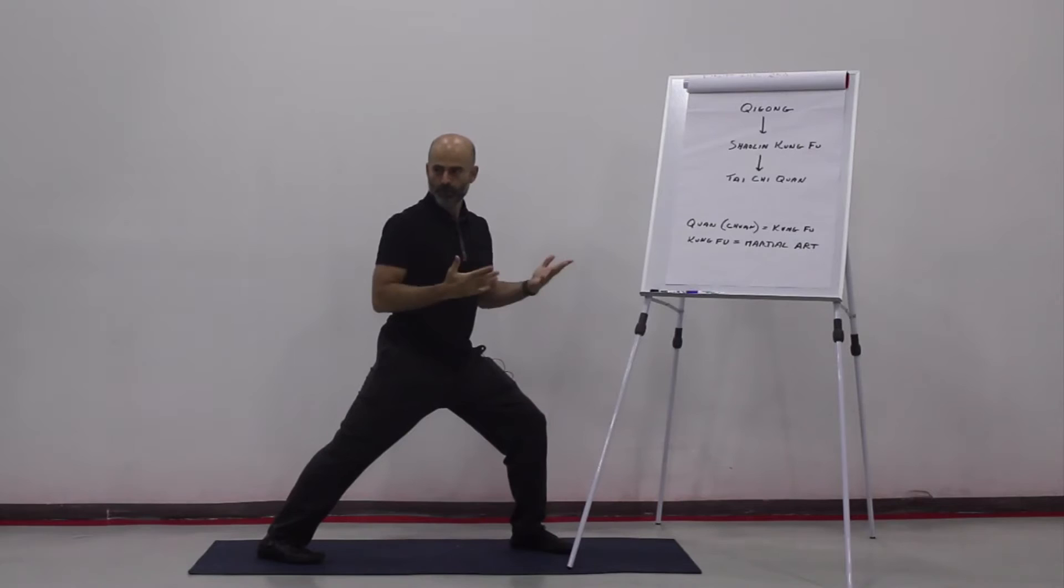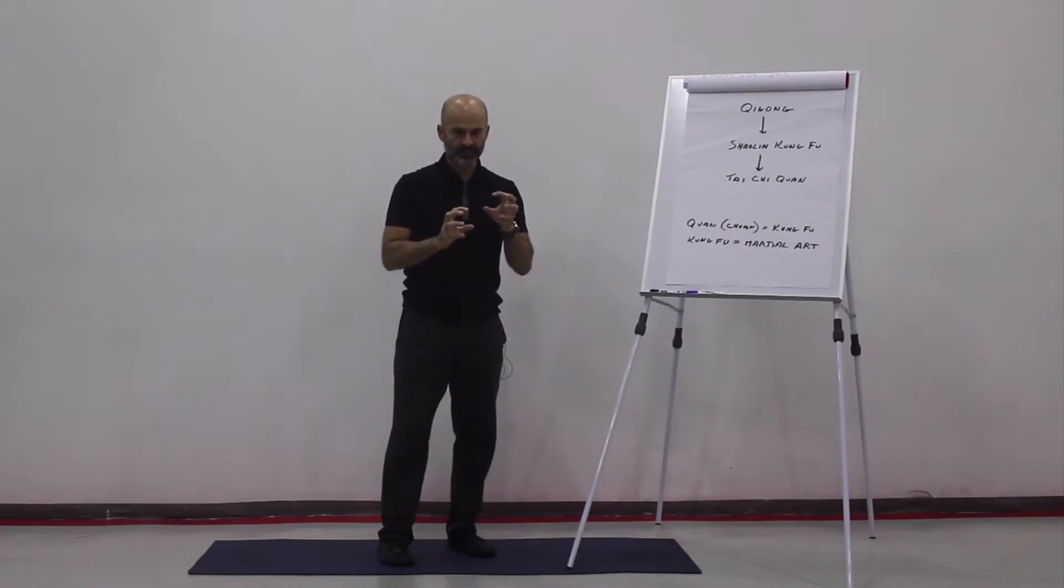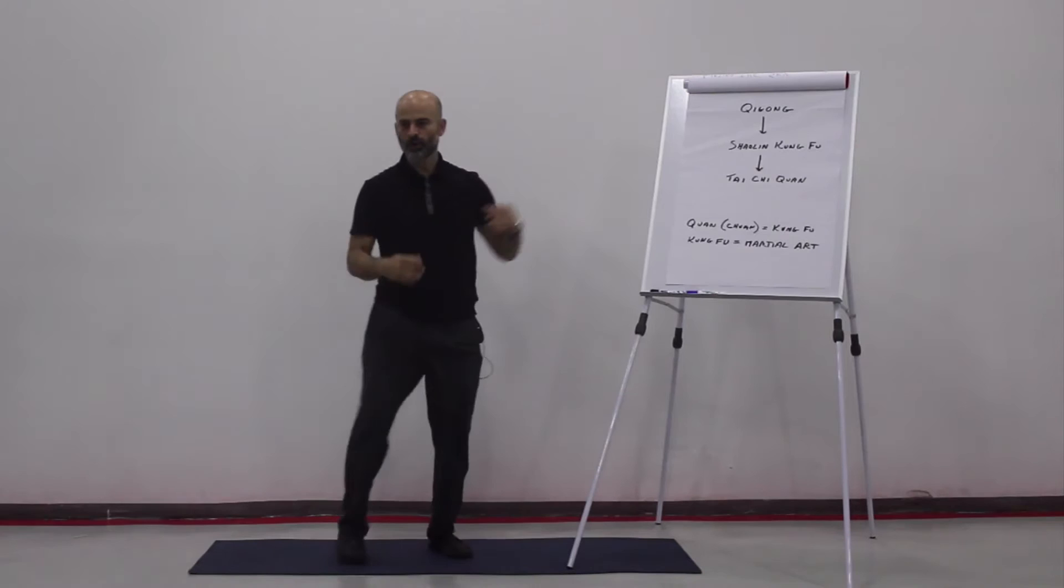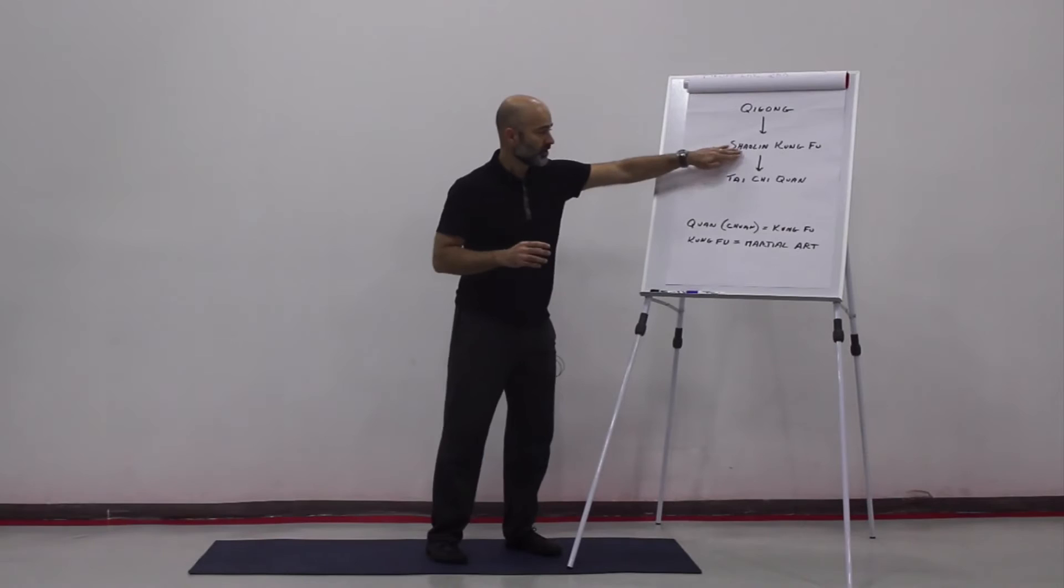Also Shaolin Kung Fu has more of the animal styles, so like the tiger, the crane, all of those are into Shaolin Kung Fu. Now we have some of that in Tai Chi as well, and that makes sense because Tai Chi really developed later out of Shaolin Kung Fu.